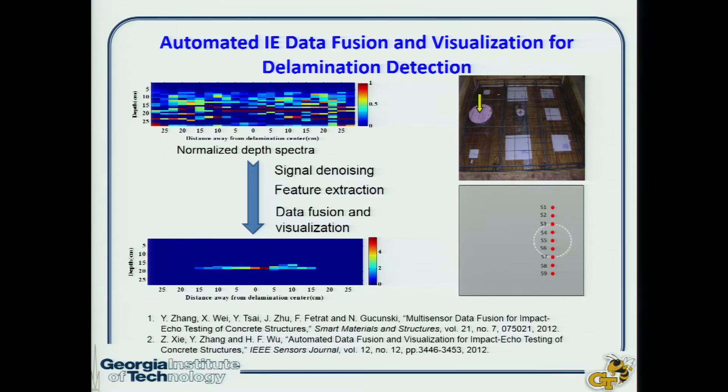One application is impact echo data fusion and visualization for delamination detection in concrete structures. If you look at the raw data, it would be very difficult for a general user without an advanced technical background to identify where a defect is or whether there is a defect at all. After going through our automated information extraction process, we can provide the user a graphical interface that accurately determines the defect location and size.